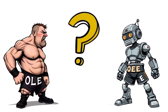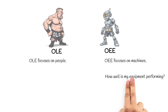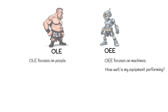Part 3: OEE vs OLE — Key Differences. Here's where most people get confused. OEE focuses on machines; OLE focuses on people. Both metrics use the same logic — Availability, Performance, and Quality — but applied to different resources. Think of it this way: OEE asks, 'How well is my equipment performing?' OLE asks, 'How well is my workforce performing?'